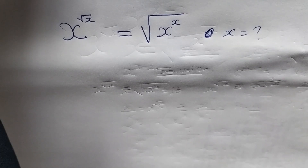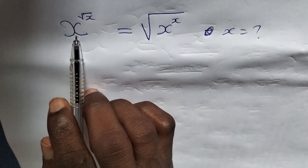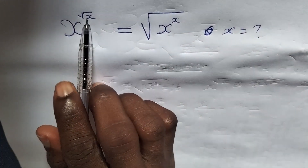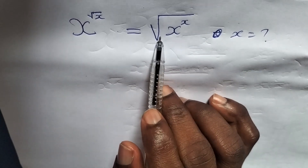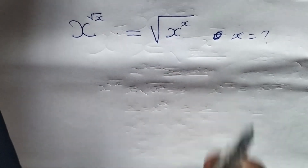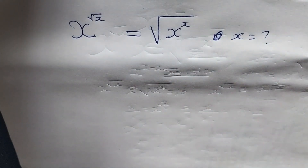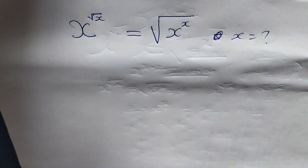Okay, welcome again guys to my channel. In today's video, we want to solve a nice radical challenge which reads: x to the power of root x is equals to root of x to the power of x. So we are looking for the possible value for x. So how can we solve for this?